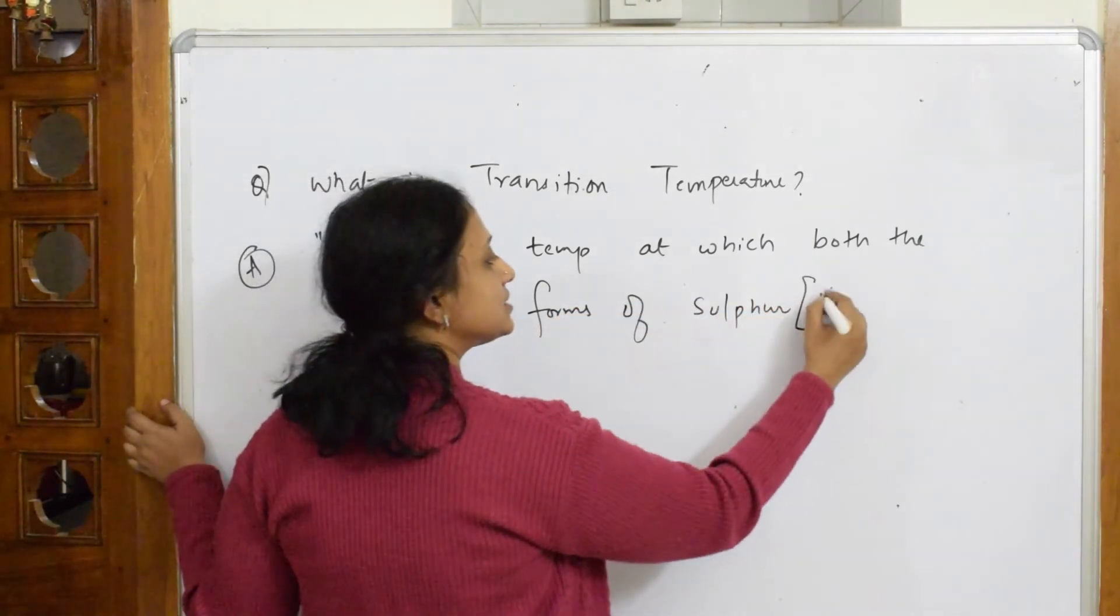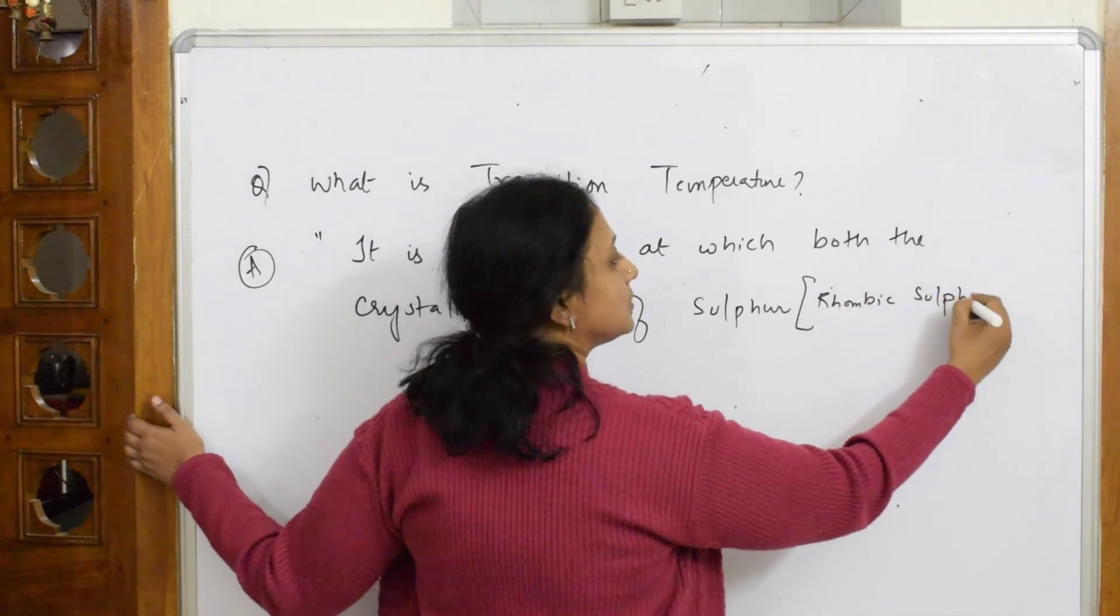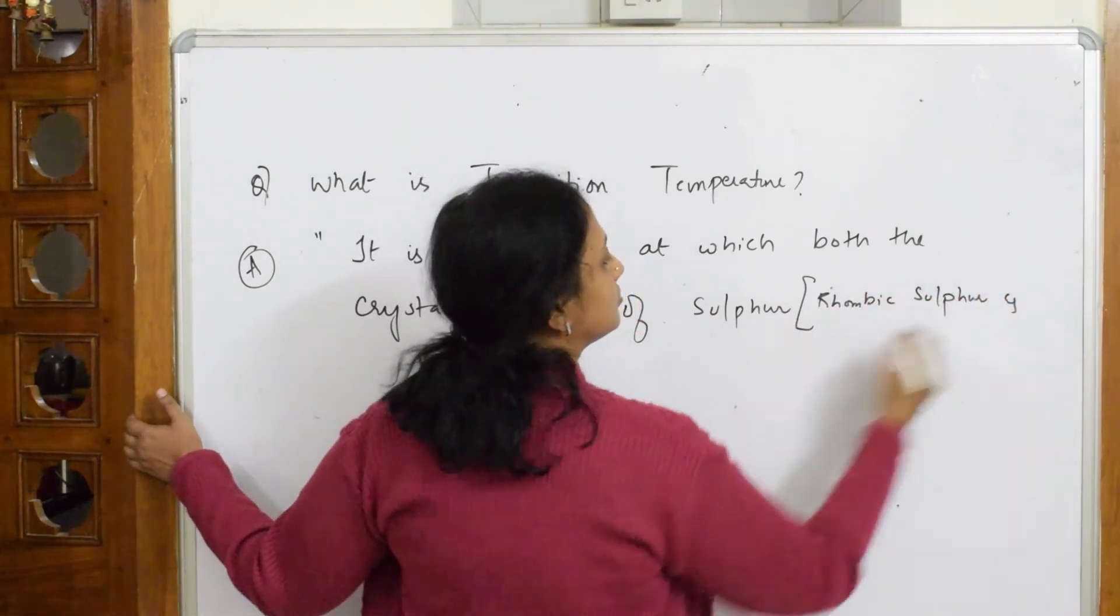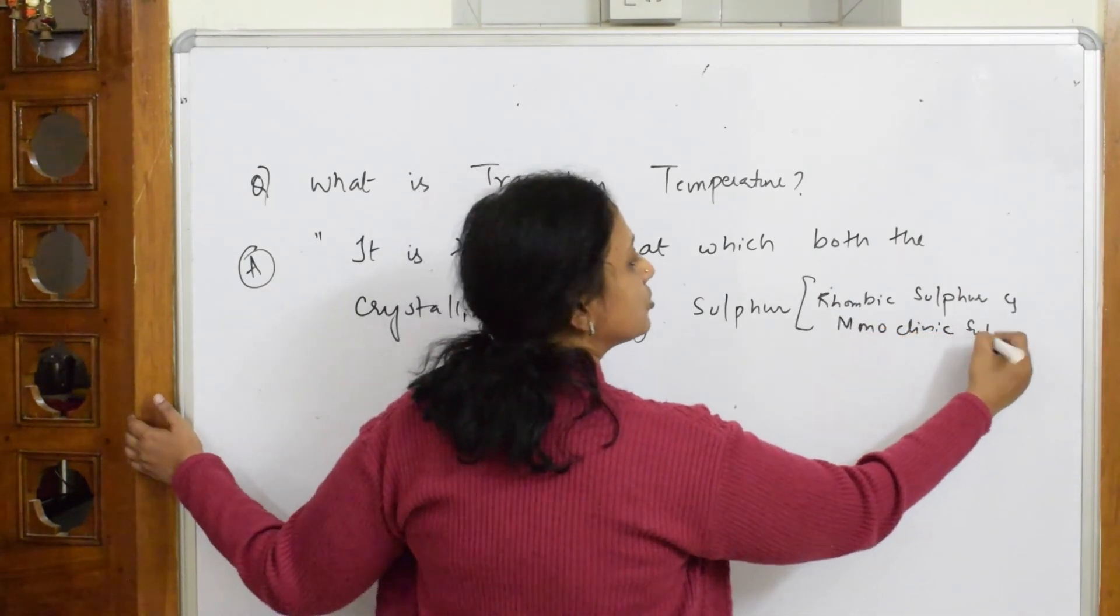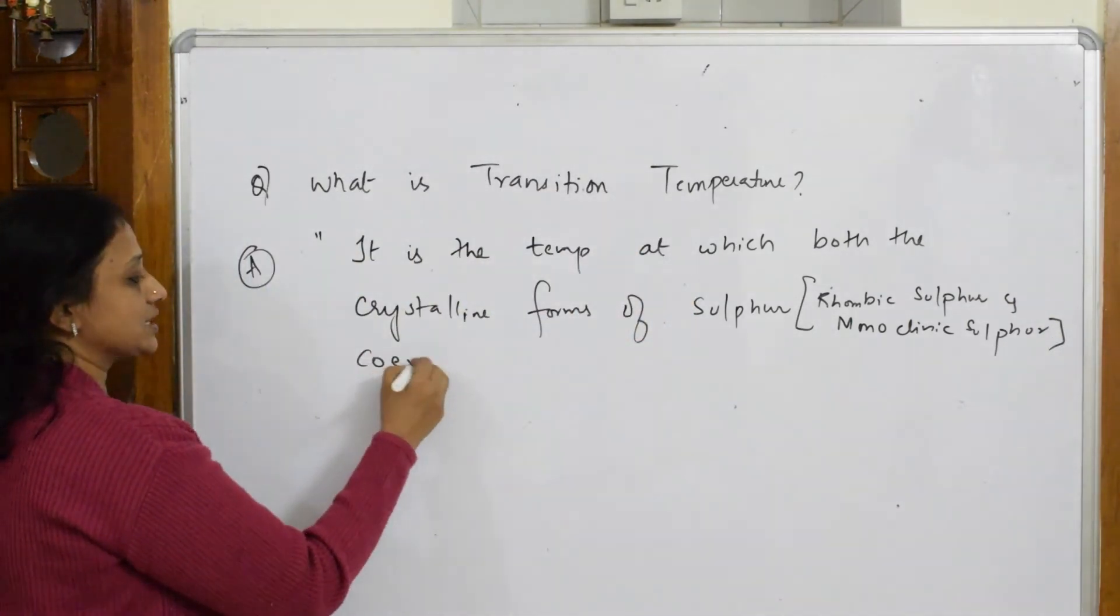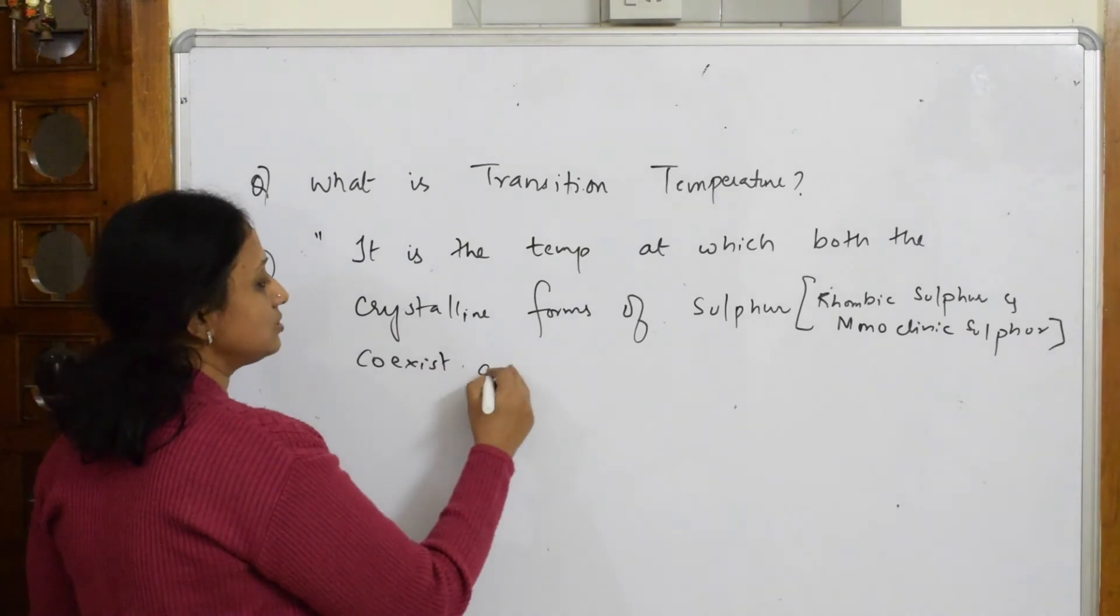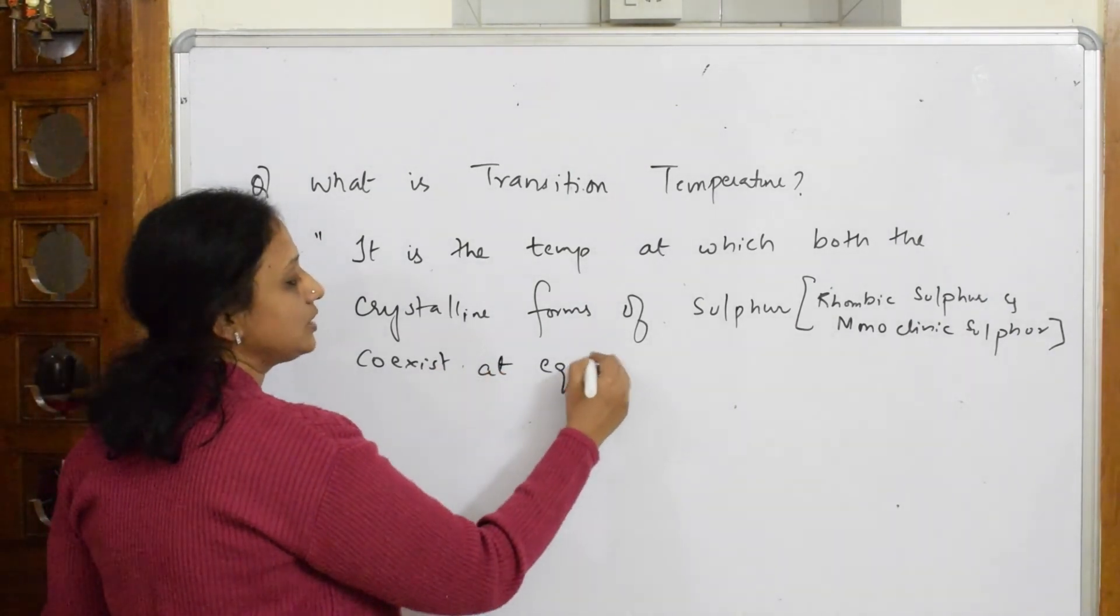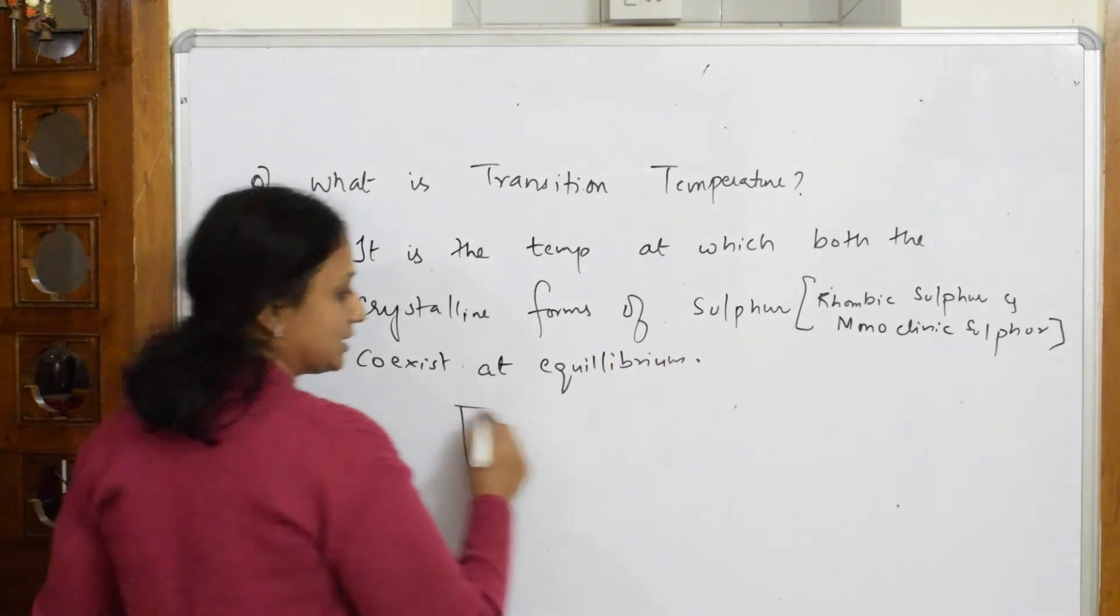Both the crystalline forms of sulfur - rhombic sulfur and monoclinic sulfur - co-exist at equilibrium. That is important: at equilibrium. Let us put that in a box so that the examiner will give you marks immediately.